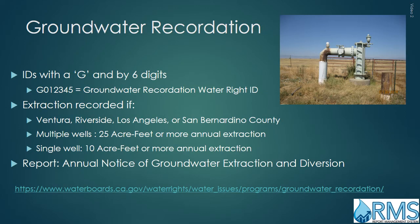Groundwater IDs begin with a G and are followed by six digits. The Water Board records the amounts of groundwater extracted by users in Ventura, Riverside, Los Angeles, and San Bernardino counties. Groundwater reporting is required in these counties for annual extractions that are greater than 25 acre-feet total from multiple wells, or 10 acre-feet from a single well. Groundwater filers use an annual report of groundwater extraction and diversion to record their water extraction.